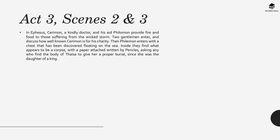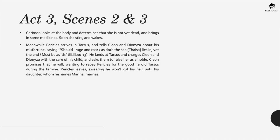In Act 3, Scenes 2 and 3, in Ephesus, Cerumen — a kind doctor — and his aide Philemon provide fire and food to those suffering from the wicked storm. Philemon enters with a chest discovered floating on the sea. Inside they find what appears to be a corpse with a paper attached, written by Pericles, asking whoever finds Thaisa's body to give her a proper burial since she was a daughter of a king. Cerumen determines she is not yet dead, brings in medicine, and soon she stirs and wakes. Meanwhile, Pericles arrives in Tarsus and charges Cleon and Dionysa with the care of his child, asking them to raise her as a noblewoman. Cleon promises, wanting to repay Pericles for his help during the famine.